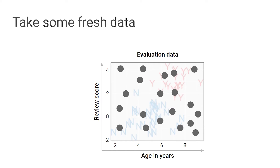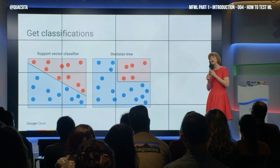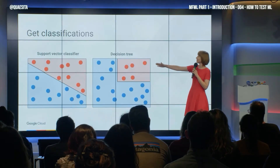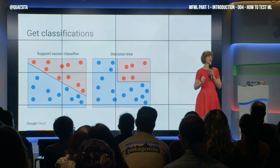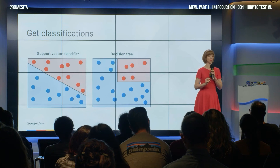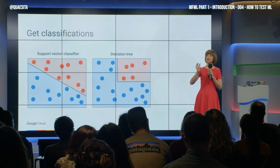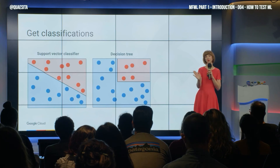Let's find out who wins on new data. In comes some new data and we apply both of our recipes to it. And of course we get different answers. When we ran these two algorithms on our initial data set — the training data set — they both gave perfect performance. They managed to split the space so all the red went to red and all the blue went to blue. No mistakes.